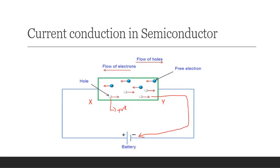Once the holes reach the negative terminal of the battery, electrons enter near terminal X. At the same time, loosely held electrons near point Y are attracted towards the positive terminal. This creates new holes near the positive terminal, which again drift towards the negative terminal.